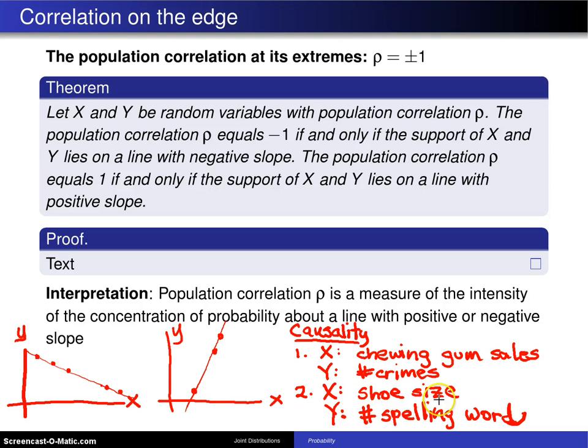shoe size is very much correlated with age, and the number of spelling words that somebody can spell is also correlated with age. And so because of that, you have no causality between x and y.